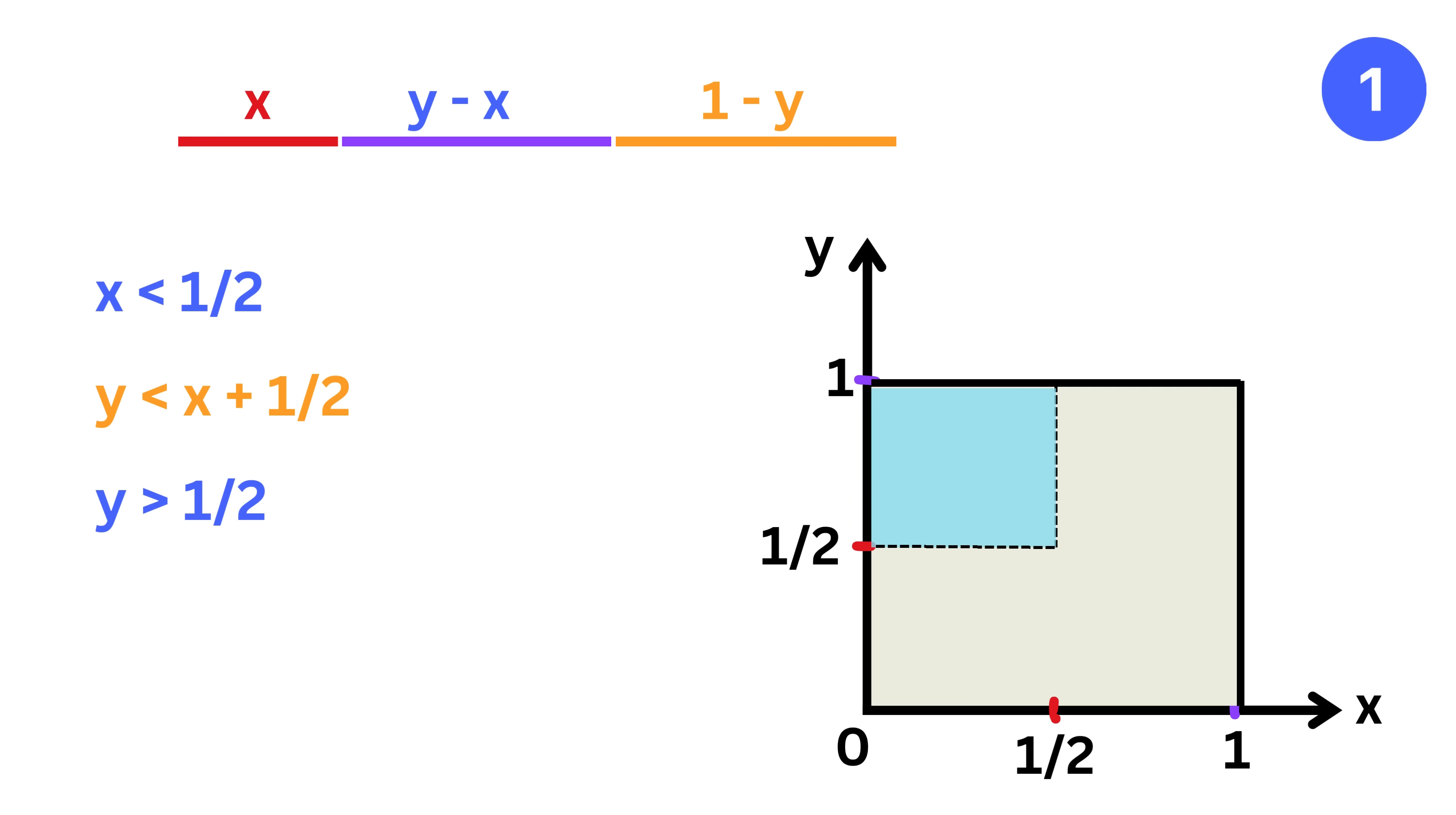This is super easy. Draw a line y equals x plus half. It will be like this, whose slope is one and y intercept is half, because it is of the form y equals mx plus c.